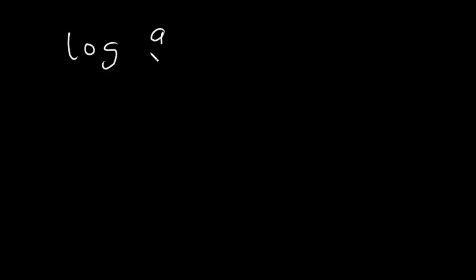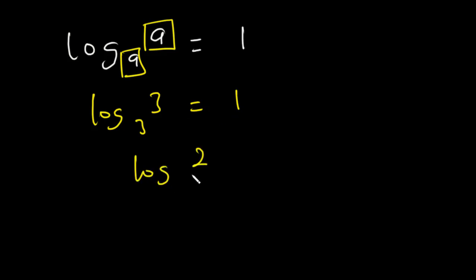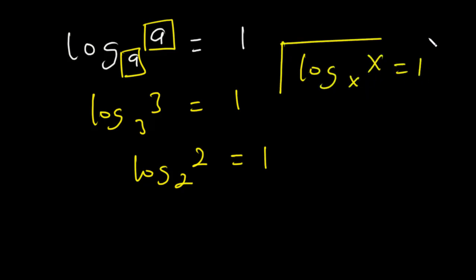Now let's talk about having logs of the same base. If you have log a base a, it is equal to 1. Whenever you have the log of the same base, it equals 1. For example: log 3 base 3 is equal to 1, log 2 base 2 is equal to 1, and log x base x is also equal to 1.